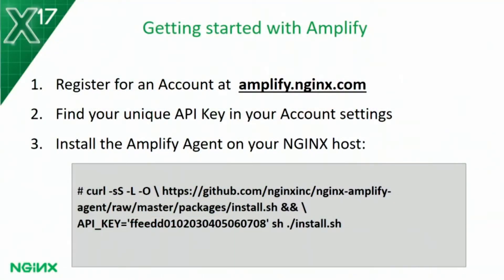Getting started with Amplify is as easy as one, two, three. Amplify is a SaaS-based solution. Go and register for an account at amplify.nginx.com. That will generate a unique API key. Find that API key in your account settings and then install the Amplify agent on your NGINX hosts. You can do that with a single command line. The agent is also provided in a range of different operating system packages with configuration scripts, so if you are automating and industrialising the way you deploy NGINX, you can bring the Amplify package into that process. From that point on, your NGINX host will connect back to our SaaS service and wait for instructions.